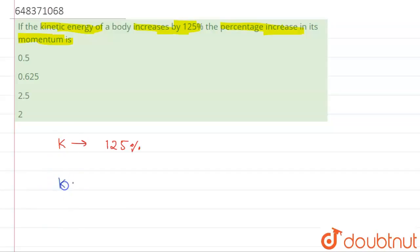If you remember, there is a formula between kinetic energy and momentum that kinetic energy is equal to p square by 2m.